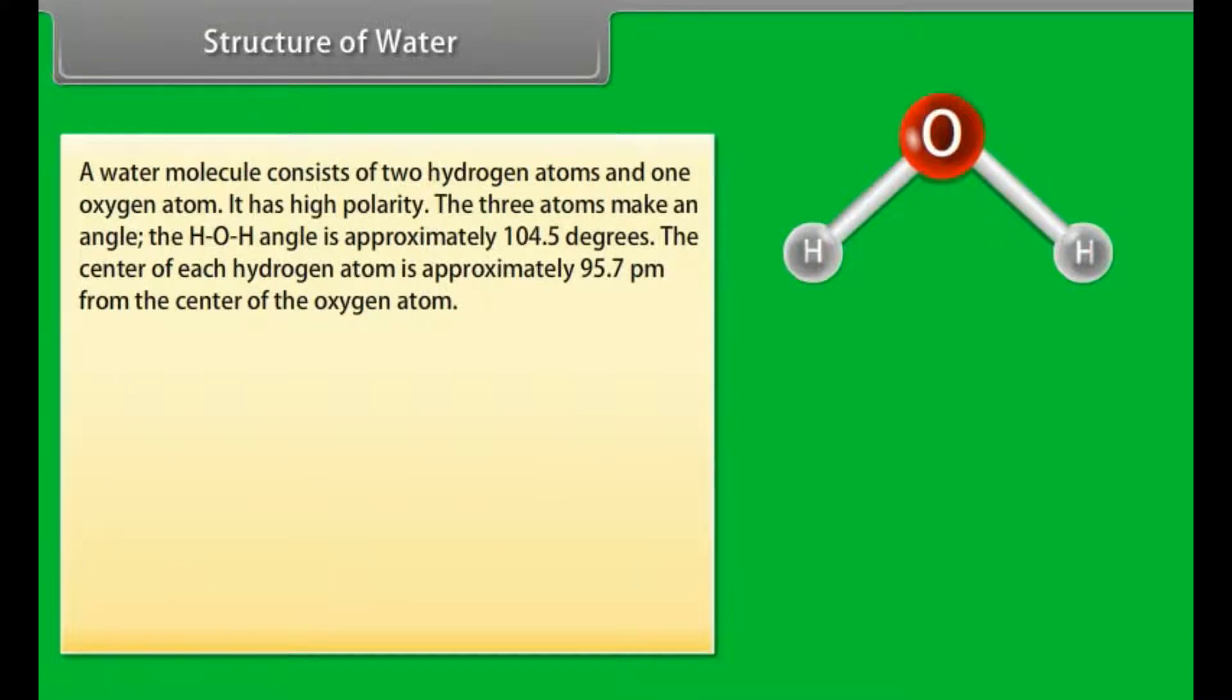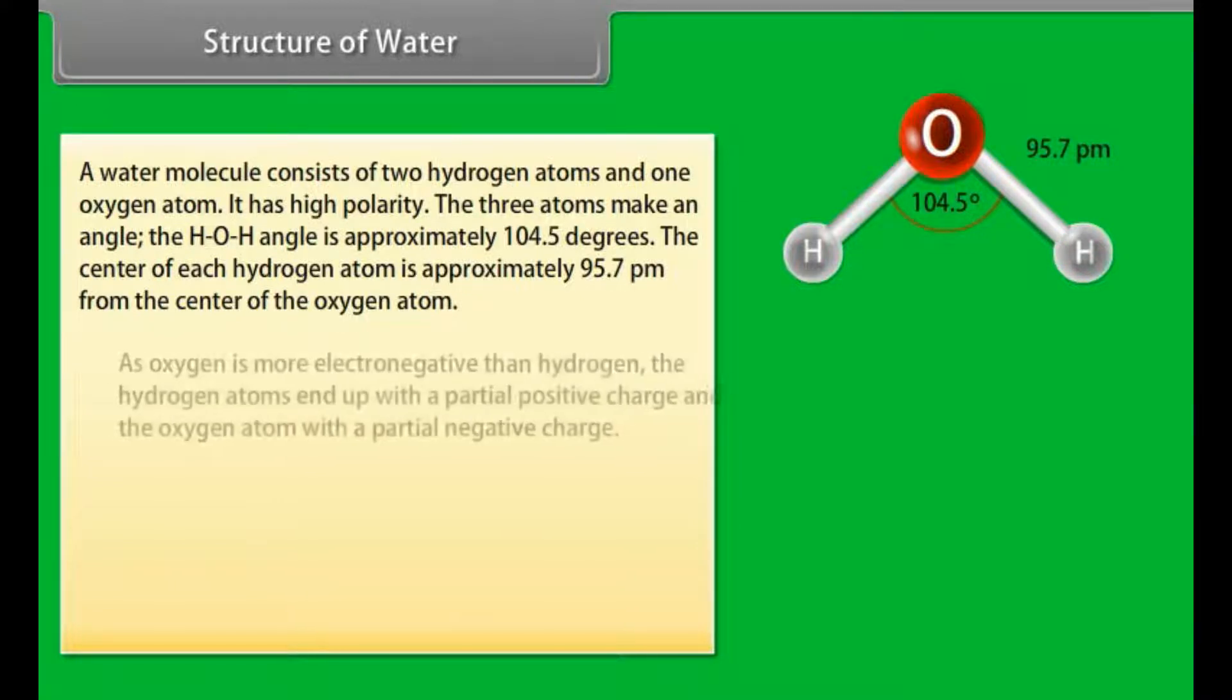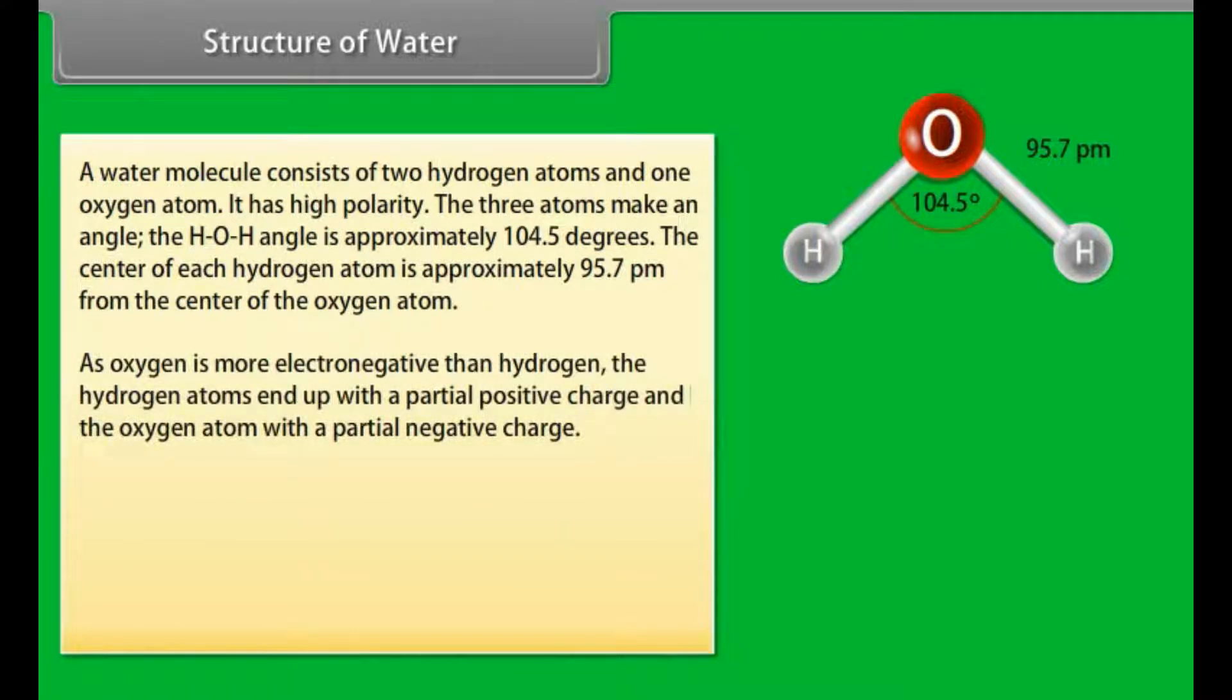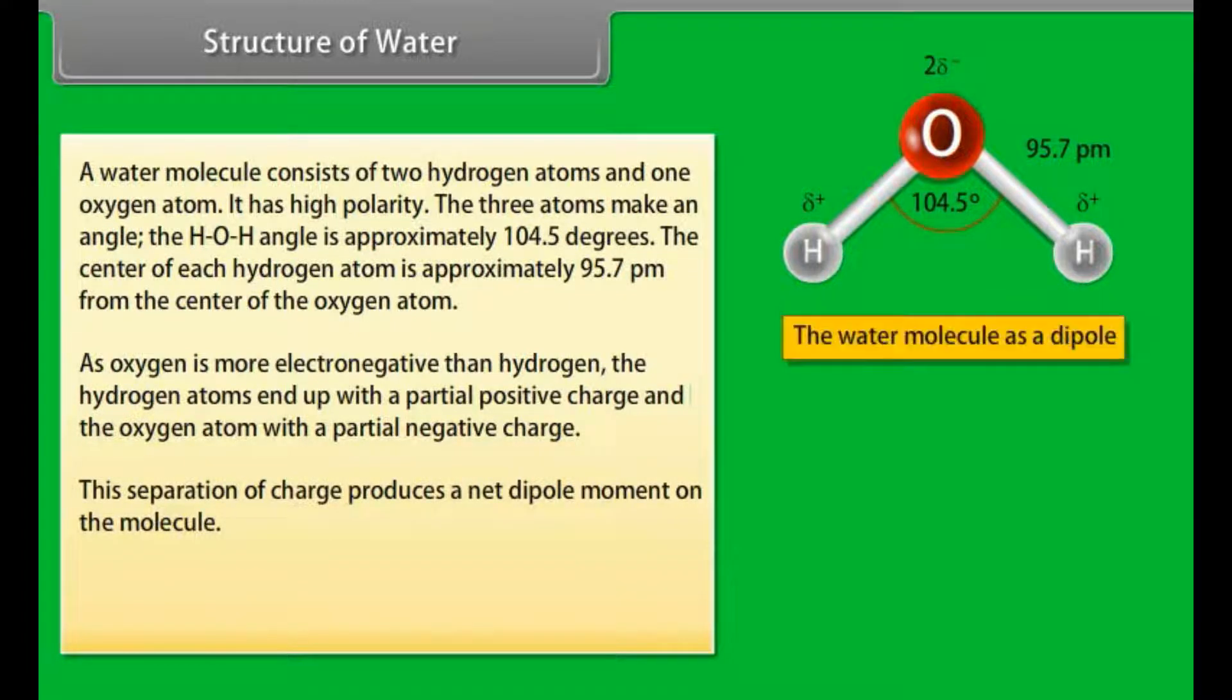Structure of water: A water molecule consists of two hydrogen atoms and one oxygen atom. It has high polarity. The HOH angle is approximately 104.5 degrees. The center of each hydrogen atom is approximately 95.7 picometer from the center of the oxygen atom. As oxygen is more electronegative than hydrogen, the hydrogen atoms have a partial positive charge and the oxygen atom has a partial negative charge. This separation of charge produces a net dipole moment on the molecule.